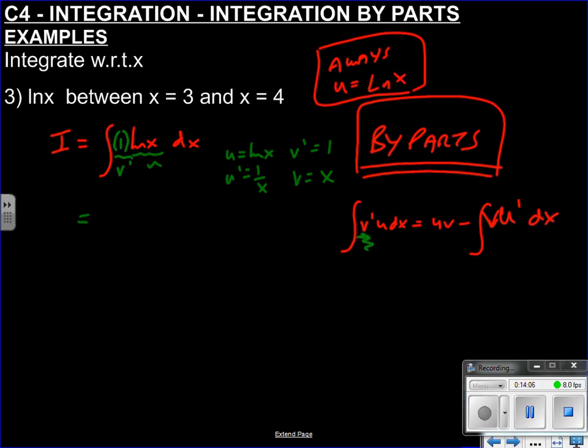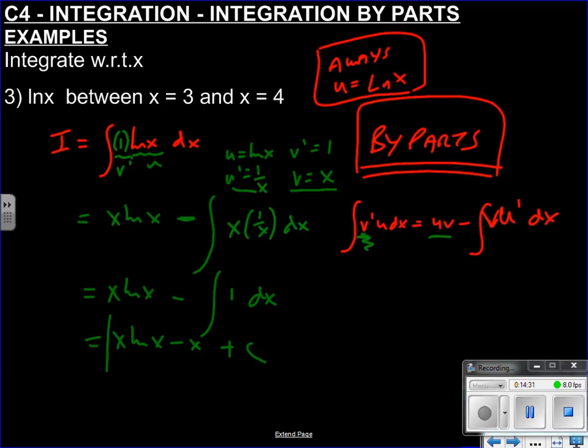V dash u dx equals u v. u is ln x times v is x. So x ln x. Minus. Always minus. And now v u dash. So v u dash. x times 1 over x. See how nice and simple this is now. So x ln x minus x over x is 1. And now we're just integrating 1. x ln x minus x plus c. And there we go. We're happy.